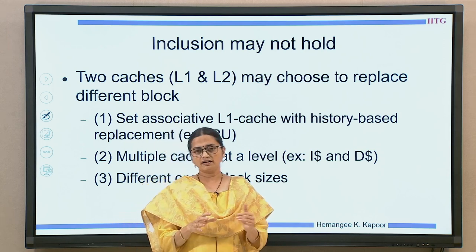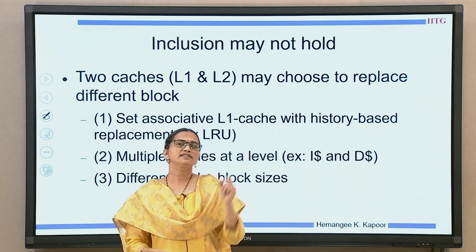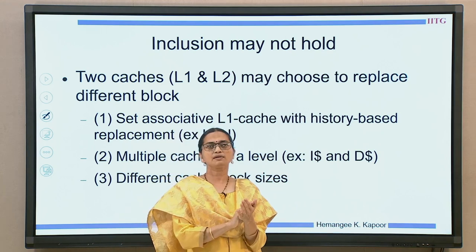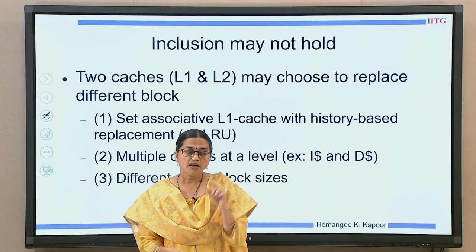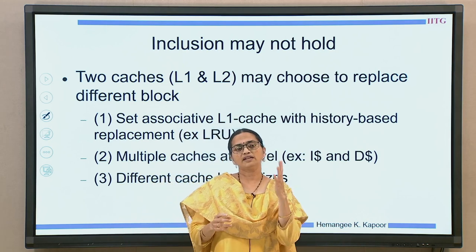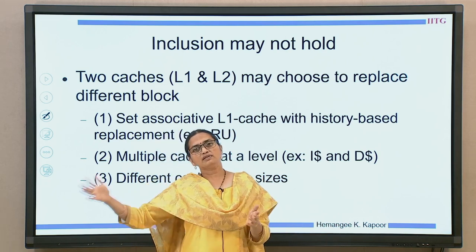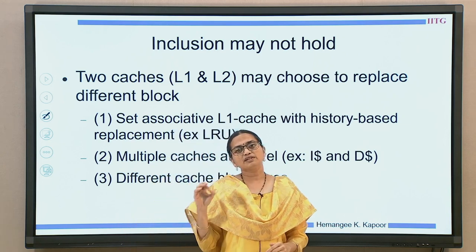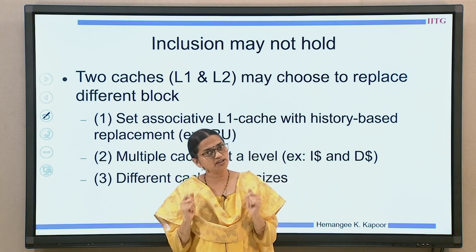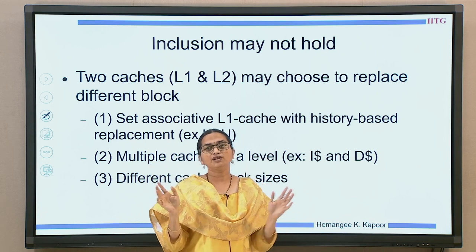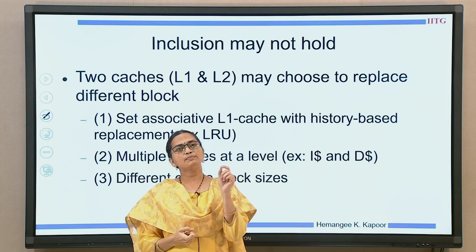Reason one: set associative L1 with history-based replacement such as LRU. The access history of L1 and L2 will definitely be different. L1 caters to requests from the processor, while L2 only gets some of the requests from L1. The history of accesses in L2 will definitely differ from L1. In our example, M1, M2, M3 are addresses that go to the same set of L1 with the same block size, and L2 is much larger. All three map to the same set in both caches.